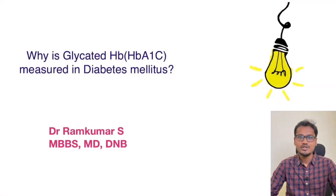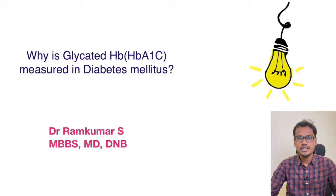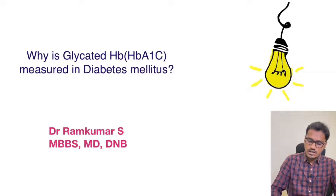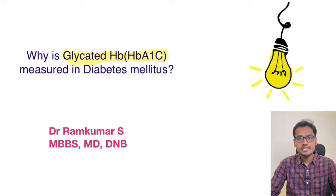Hello everyone, welcome to my YouTube channel Physiology Learning. I am Dr. Ram. Today in this Explain Why series we are going to discuss why glycated hemoglobin, that is HbA1c, is measured in diabetes mellitus. Previously in diabetes mellitus only fasting blood sugars and postprandial levels were measured, but now HbA1c or glycated hemoglobin is measured routinely and it gives a better estimate of blood sugar levels.